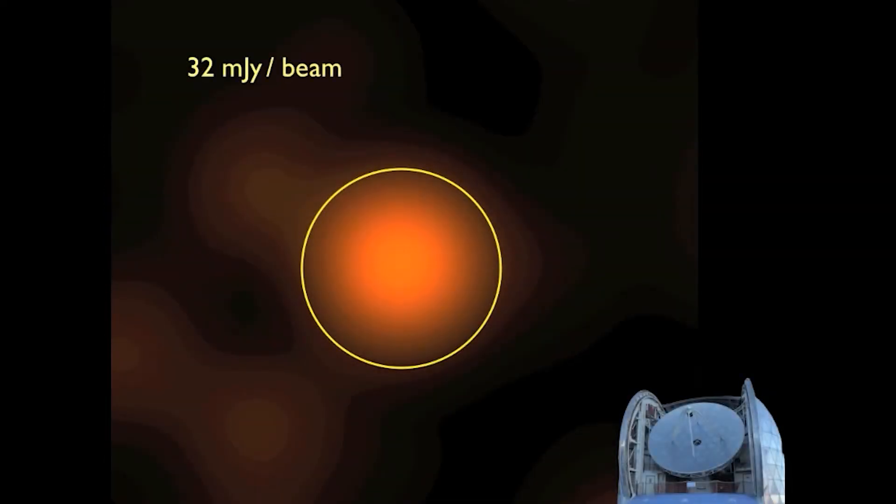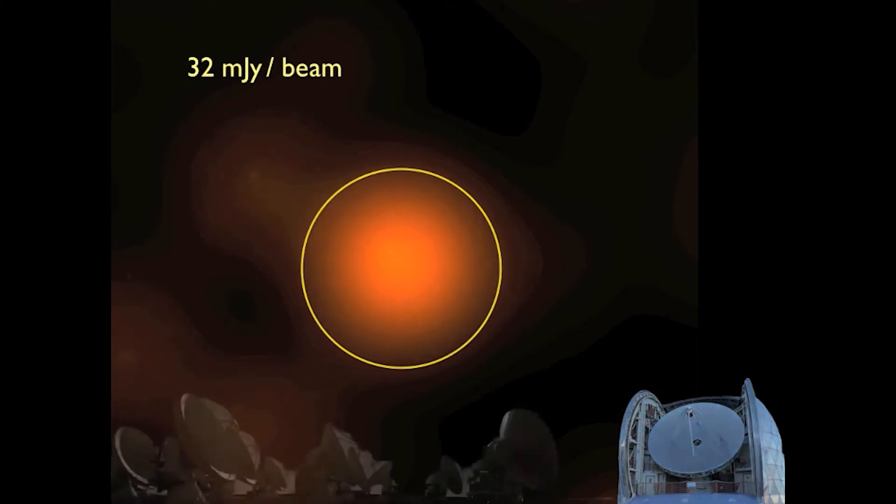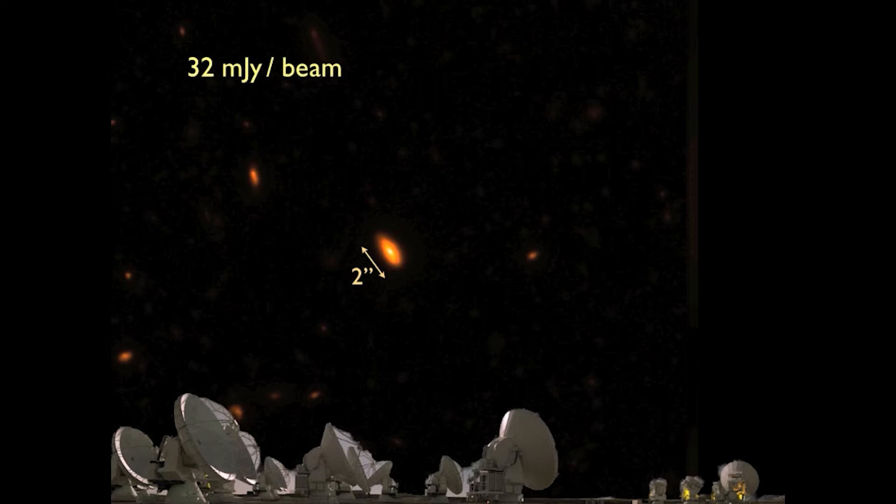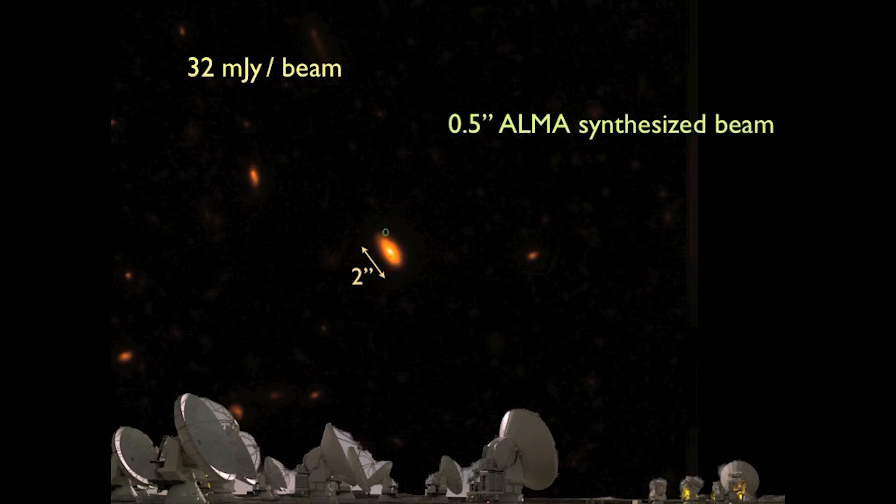Suppose you have a CSO observation of a submillimeter galaxy, and have measured a flux density of 32 millijanskys within the CSO beam. From other evidence, you believe that the angular size of the galaxy is about two arcseconds, and you'd like to observe it with ALMA at an angular resolution of half an arcsecond. That two arcsecond wide galaxy is now four ALMA beams wide, or 16 ALMA beams in area.